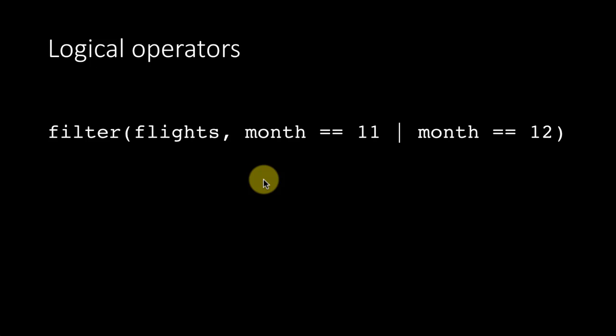Let's see how we can apply some of these logical operators. Now suppose we want to find all the flights within our flights table, all the flights that operated either in the month of November or in the month of December. Notice, remember that the months are represented by their respective numbers. So the answer would be filter flights, month is 11, or the or operator as we have seen before, month is 12.